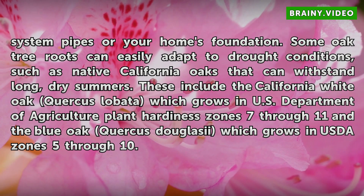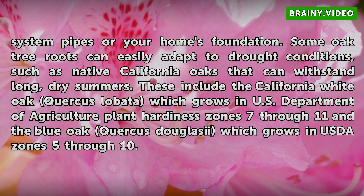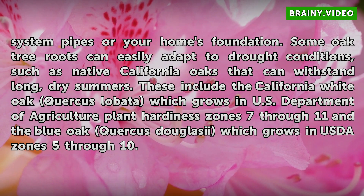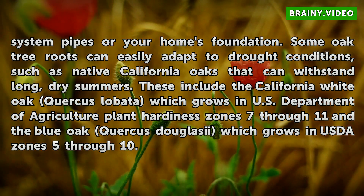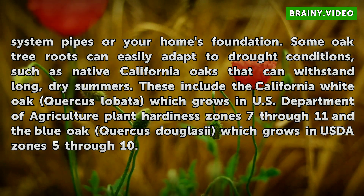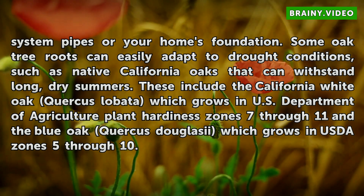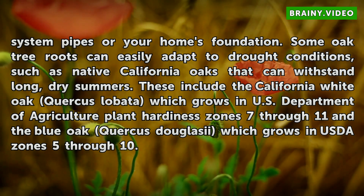Some oak tree roots can easily adapt to drought conditions, such as native California oaks that can withstand long, dry summers. These include the California white oak (Quercus lobata), which grows in U.S. Department of Agriculture Plant Hardiness zones 7–11, and the blue oak (Quercus douglasii), which grows in USDA zones 5–10.